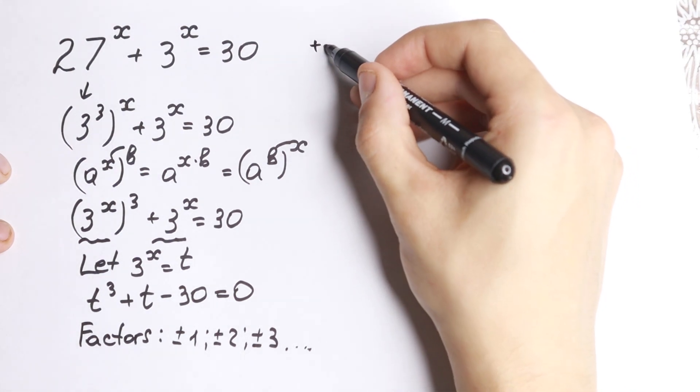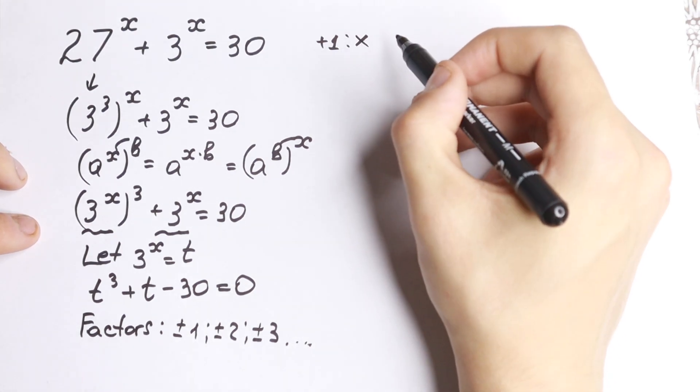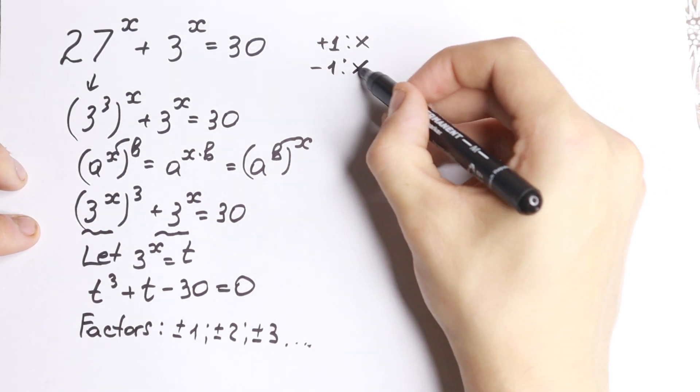So for example, we have plus 1. If you plug in 1, we'll have 1 plus 1 minus 30, so no good. If we have minus 1, the same thing, no good.